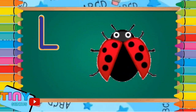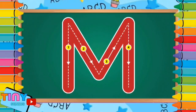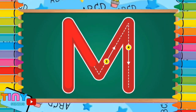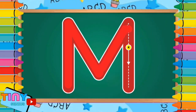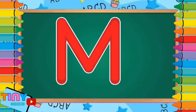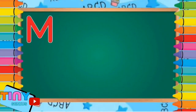Okay, kids, let's learn the next one, the letter M. Pull down, slant down, slant up, pull down. M is for monkey.